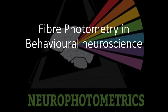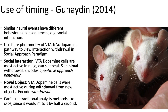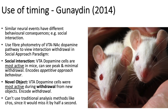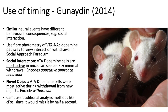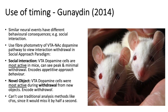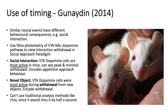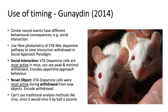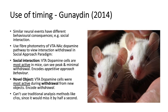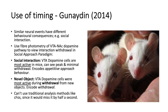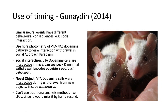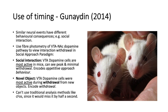Regarding fiber photometry and its use in behavioral neuroscience — use of timing: Gunaydin in 2014 found that similar neural events have different behavioral consequences, such as social interaction. This researcher used fiber photometry of the ventral tegmental area and nucleus accumbens dopamine pathway to view interaction and withdrawal. The VTA dopamine cells were most active in mice, with a peak during approach and minimal activity during withdrawal — this encodes appetitive approach behavior. You can also see effects toward novel objects, whereby the VTA dopamine cells were most active during withdrawal from new objects. Traditional methods like cFos cannot capture this, since it would miss this neurophysiological phenomenon by half a second.